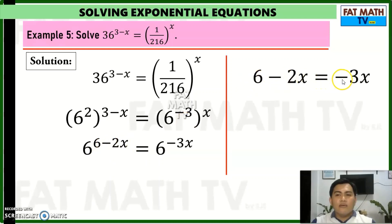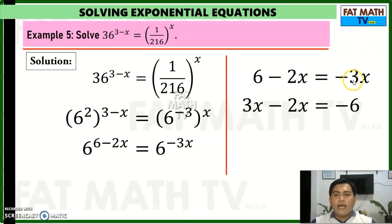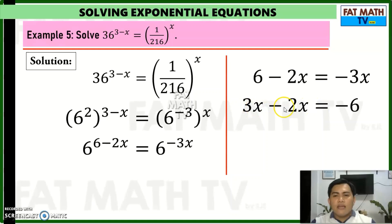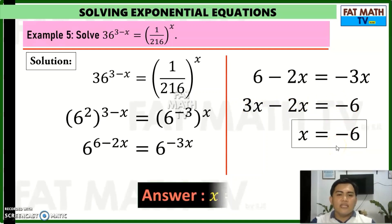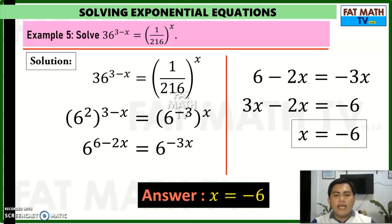Using the one-to-one property of exponential functions, this gives us 6 minus 2x equals negative 3x. Solving this linear equation: moving negative 3x to the left gives positive 3x, and moving 6 to the right gives negative 6. Then 3x minus 2x is x, so x equals negative 6 is the solution.